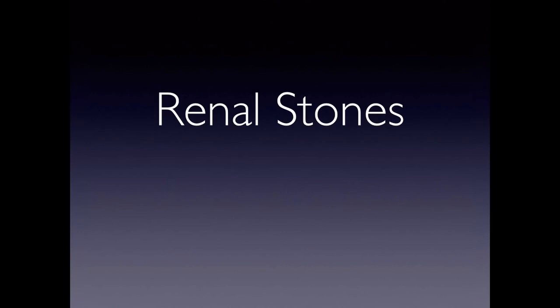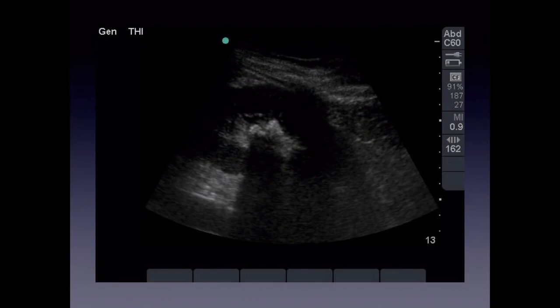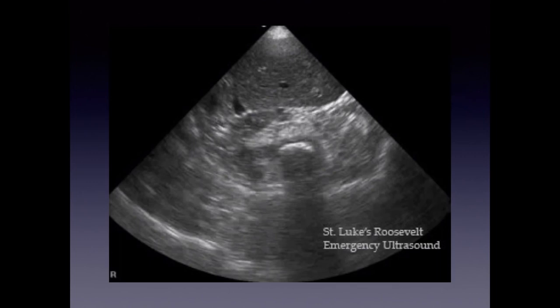Renal stones can be seen in the kidney on ultrasound, though they are usually not visible in the mid-ureter. Stones in the proximal or very distal ureter adjacent to the bladder may sometimes be visualized. Renal stones appear hyperechoic with a posterior clean acoustic shadow — well-demarcated — as opposed to the dirty shadow seen with bowel gas. This is because calcium stones block ultrasound waves completely.